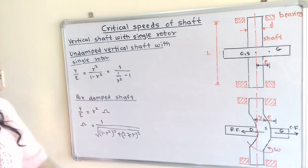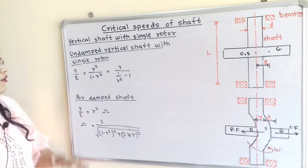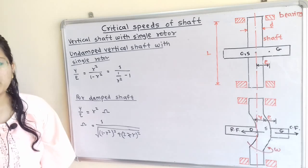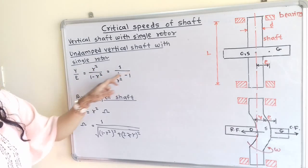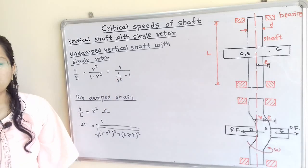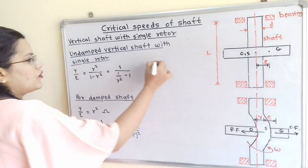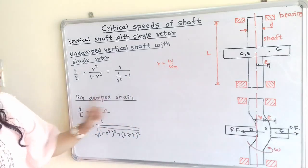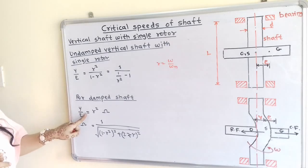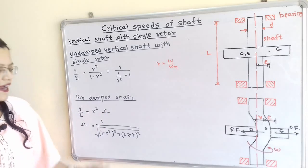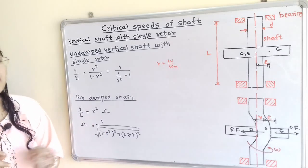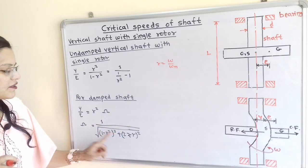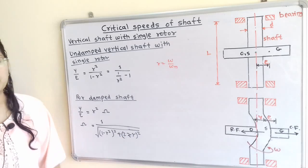For an undamped vertical shaft with single rotor: Y/E = R² / (1 − R²), which can be rewritten as 1 / (1/R² − 1), where R is the frequency ratio equal to omega / omega_N. For a damped shaft: Y/E = R² times the magnification factor, where the magnification factor equals 1 / sqrt[(1 − R²)² + (2 zeta R)²].